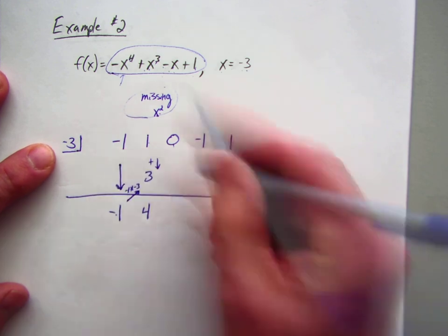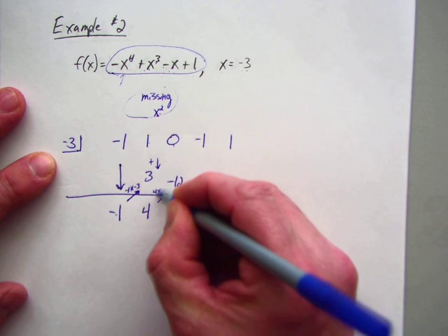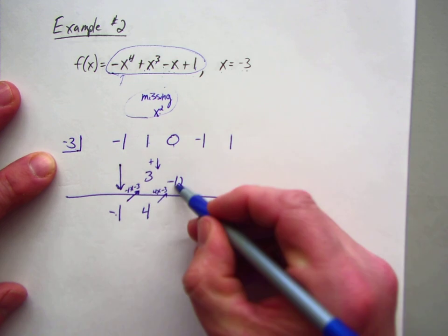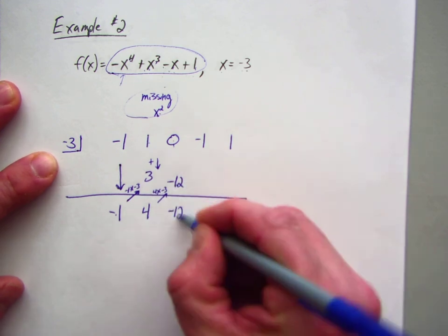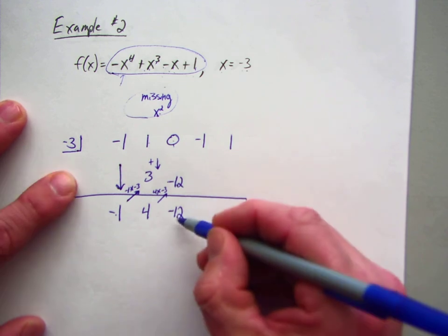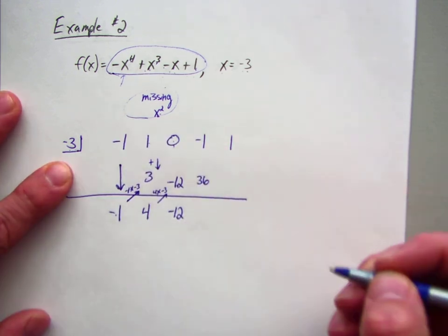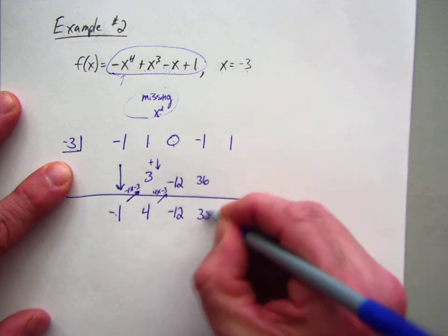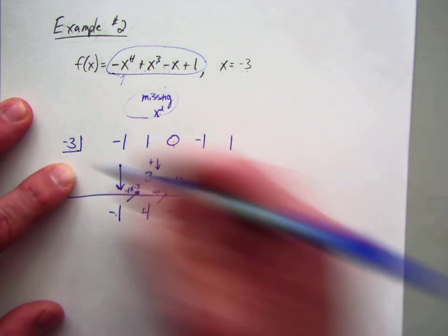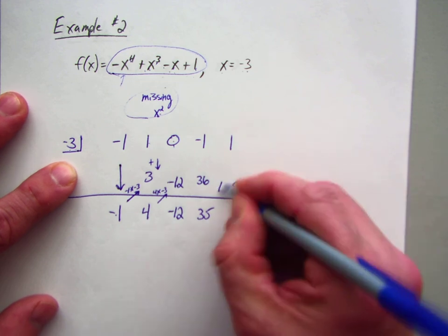Then repeat the process. 4 times negative 3 is negative 12. So I did 4 times negative 3 is negative 12. So negative 12 plus 0 is negative 12. Then do negative 12 times negative 3 is positive 36. Add going down gives me 35.